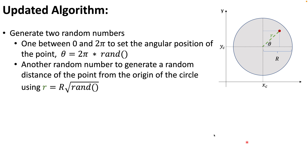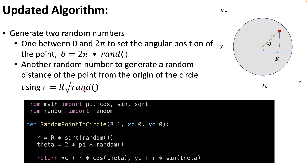Going back to the original algorithm, the only change is where we calculate the random distance from the origin — we now compute it as R times the square root of rand(). In the updated Python code, only this part changes: we calculate r as R · sqrt(rand()), compute theta as before, and then return the x and y coordinates using those two values.